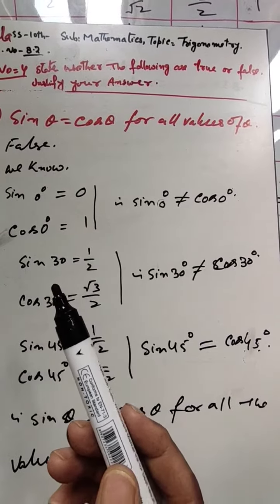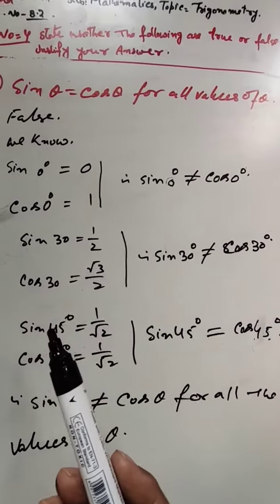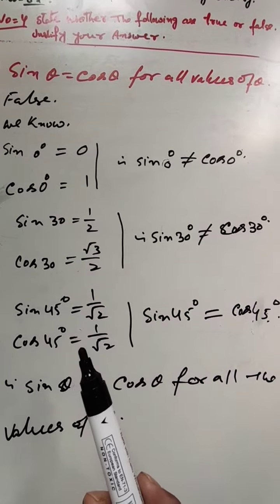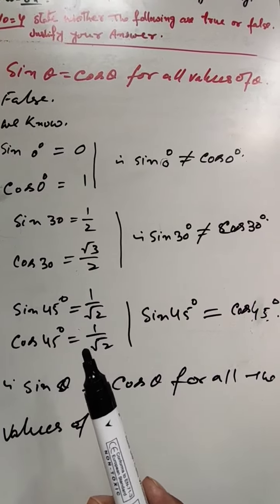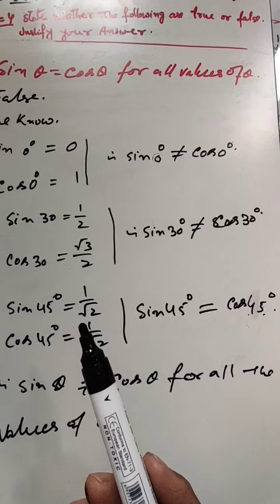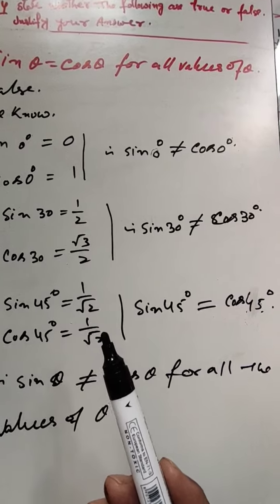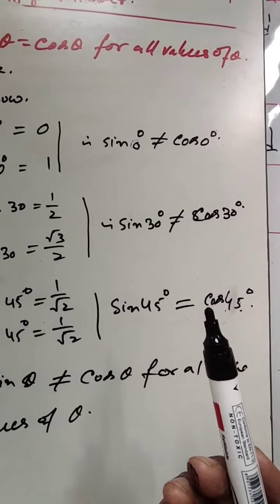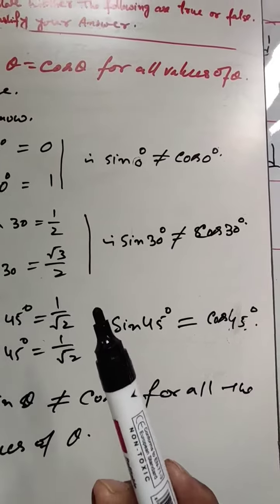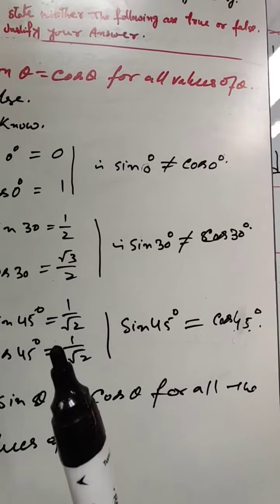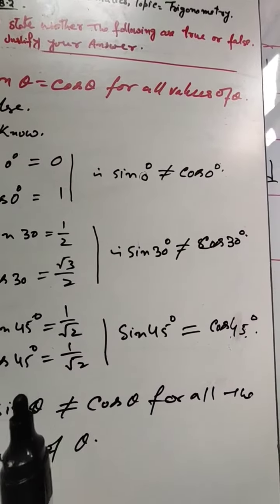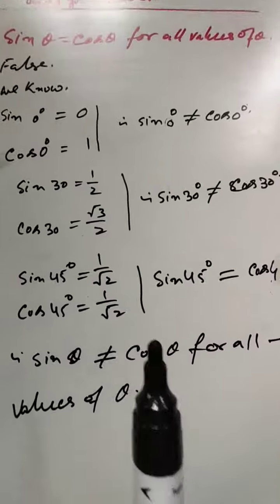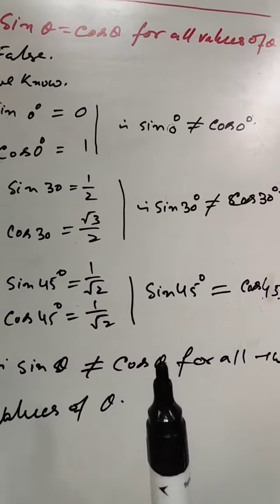For 45°, sine of 45° is equal to cos of 45°, both equal to 1/√2. These are equal, so sine 45° equals cos 45°. As mentioned, only for the angle of 45° is sine θ equal to cos θ.